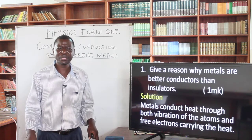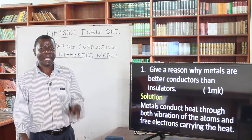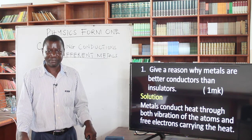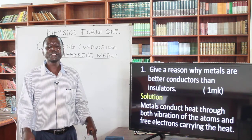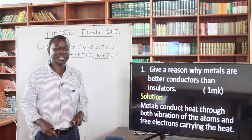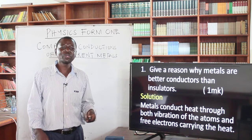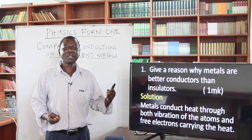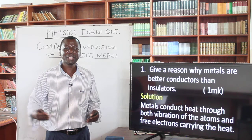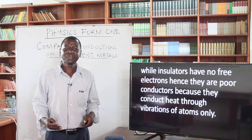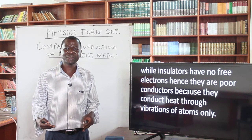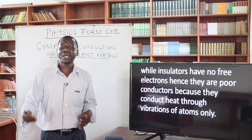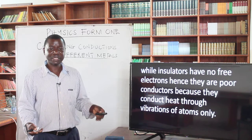Now consider this question: give a reason why metals are better conductors than insulators. The reason is because metals conduct heat through both vibration of atoms and free electrons carrying the heat from the heated end to the other end. While insulators have no free electrons, they are poor conductors because they conduct heat through vibration of atoms only.